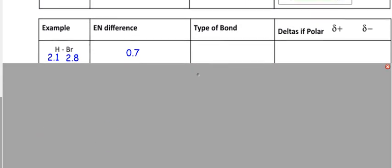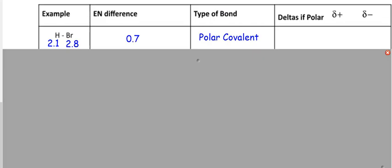Now we have something called deltas if polar. Well, it is polar covalent, so I have to put some deltas in there. What you need to do is rewrite your H and your Br. Now you say, which one loved the electrons more? Look over here again. Which has a higher number? That's what that number means. Bromine has the bigger number. What does that mean? That the hydrogen and the bromine are not sharing equally. They're not playing nice. Bromine is taking its larger share of those electrons.